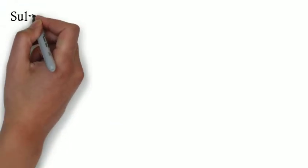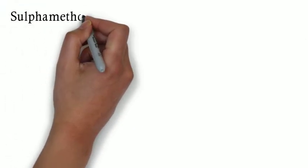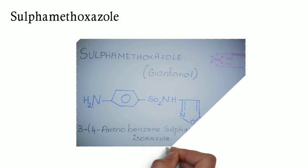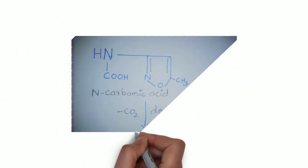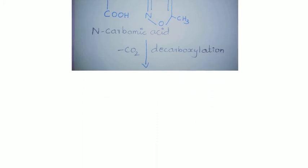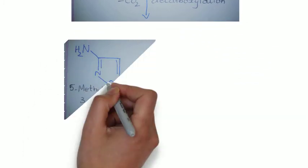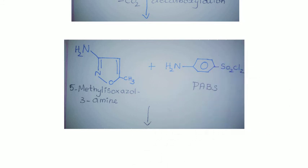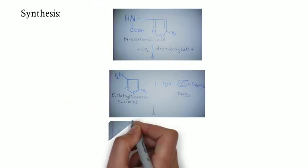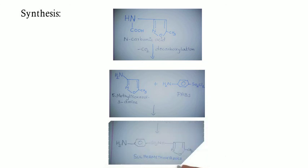The next synthesis is sulfamethoxazole, otherwise known as Gantanol. The starting material for the synthesis of sulfamethoxazole is N-carbamic acid. By decarboxylation of N-carbamic acid, we get the product 5-methylisoxazol-3-amine. By combining this product with para-aminobenzene sulfonic acid, we get the required product sulfamethoxazole.